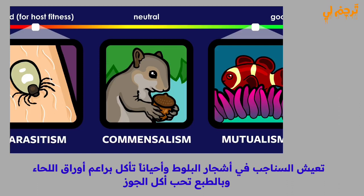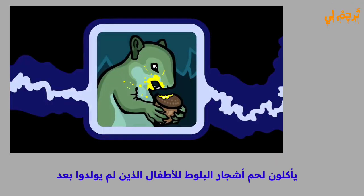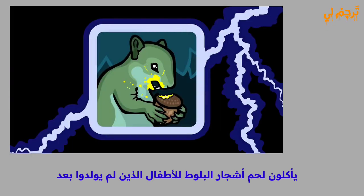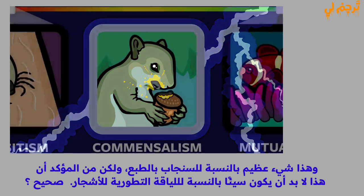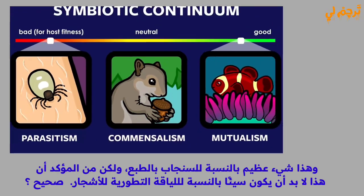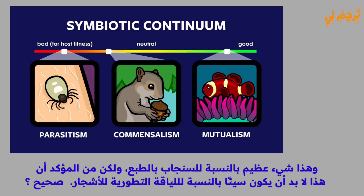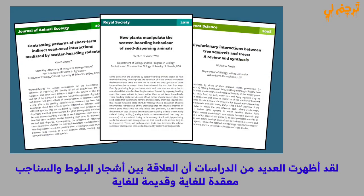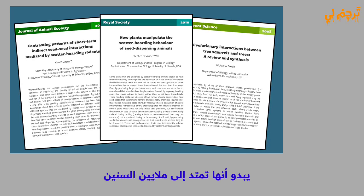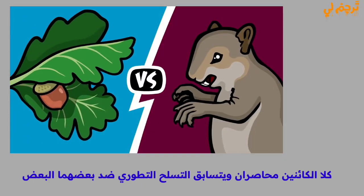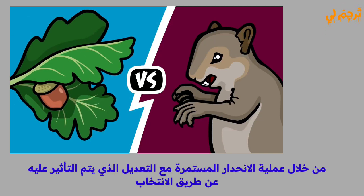Squirrels consume the flesh of the oak tree's unborn children. This is great for the squirrel, but surely this must be bad for the tree's evolutionary fitness, right? Well, multiple studies have shown that the relationship between oak trees and squirrels is both extremely complex and extremely ancient, apparently stretching back millions of years. Both organisms are trapped in an evolutionary arms race against each other.